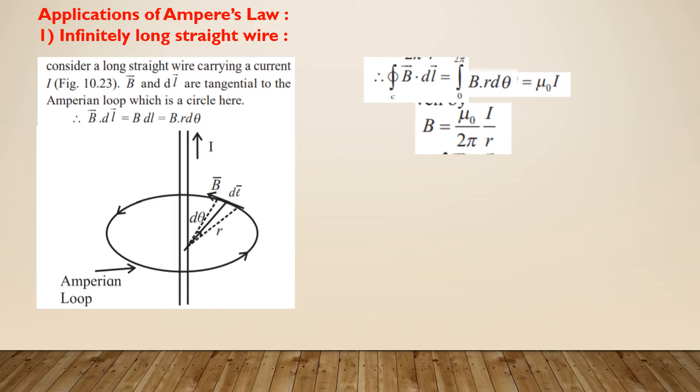Here, both B bar and DL bar are tangential to the circle, that is along the same direction. Therefore, theta is equal to 0 implies that cos theta is equal to 1. Thus, B bar dot DL bar is equal to B DL.